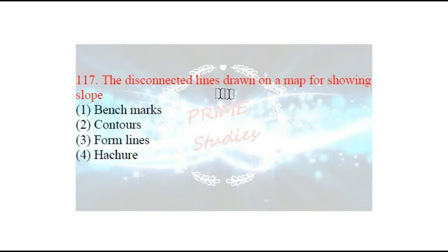Next question: disconnected lines drawn on a map for showing slope — kisi bhi map ke upar, aapas mein bina judi lines jo ki slope, matlab dhalan ko dikhati hain — unko hum kya bolte hain? Unko bolte hain hachures.